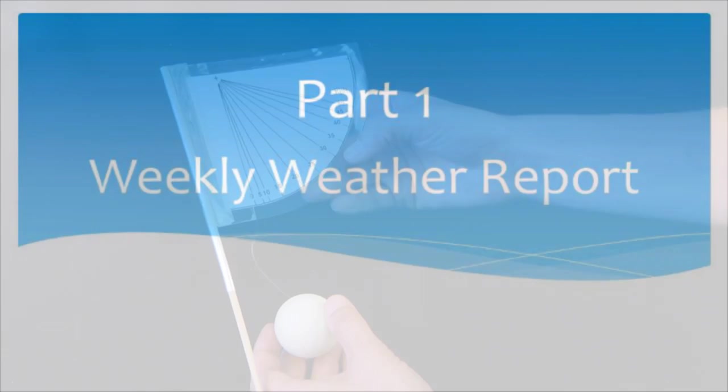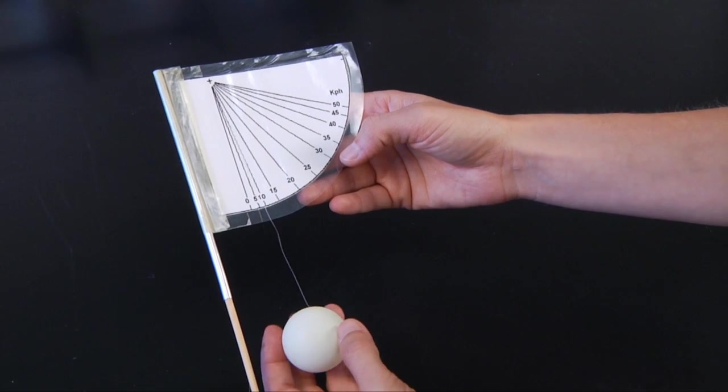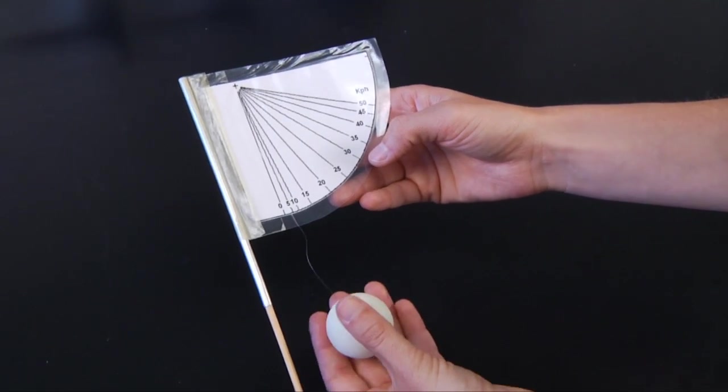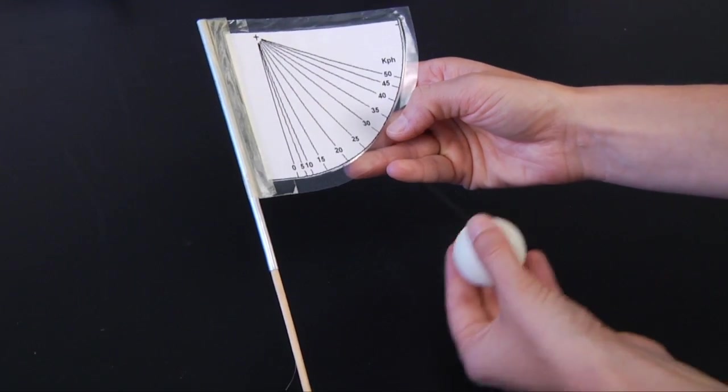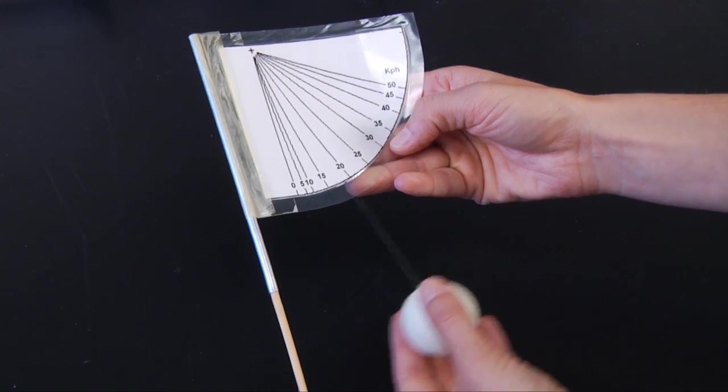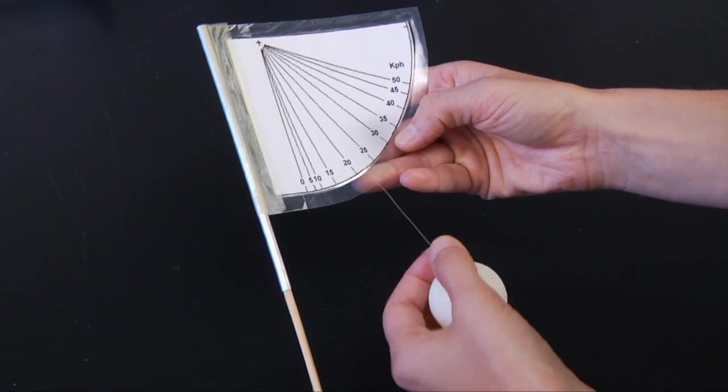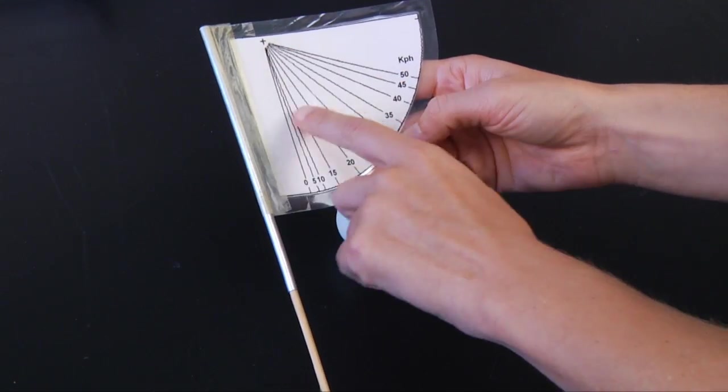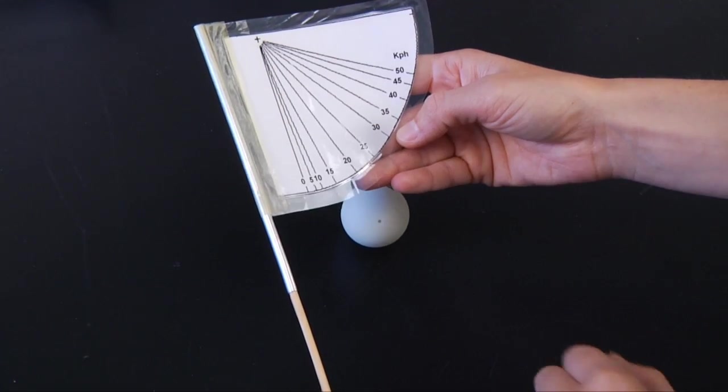So this is the wind gauge that you're going to be using outside at your weather station. What we have is a ping pong ball that as the wind blows will hopefully move up and down here in the wind. You have a fishing line that's attached to this little star up here. So make sure that you're threading it right through that point.